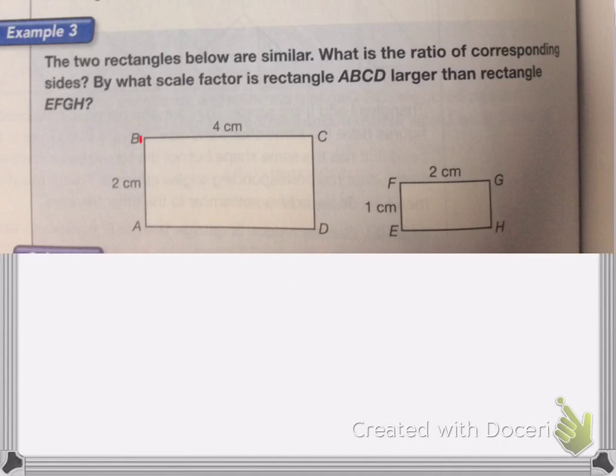So for example, side AB is 2 cm. I'm going to look at the same side on my smaller rectangle. So here I have, it's 1 cm. So the ratio is 2, 2 for my big one, to 1 for my small one. So that's the ratio of that side.